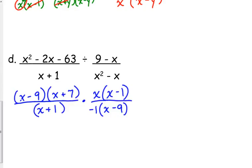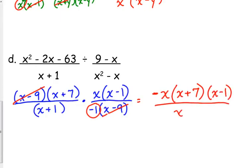So I can cancel the x minus 9. And that's the only thing I can cancel here. Now that negative 1, though, we don't leave negatives in the denominator. So I'm going to slide it up to the numerator with that x. And that's it.